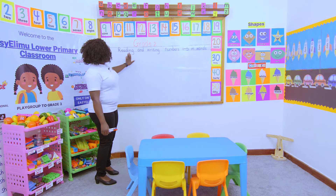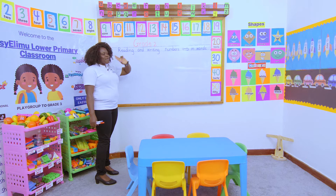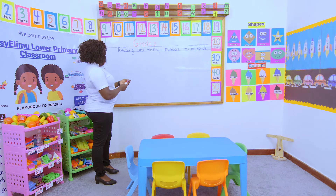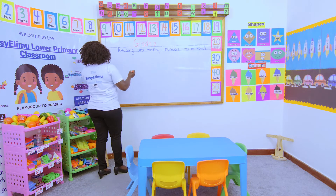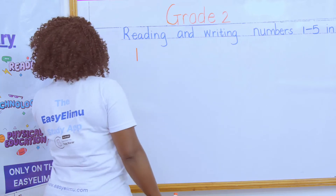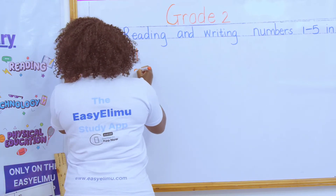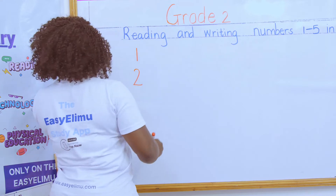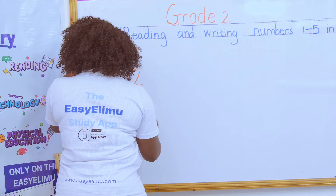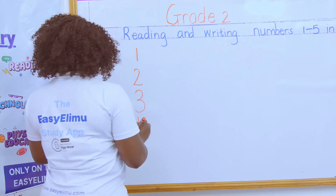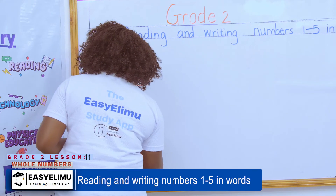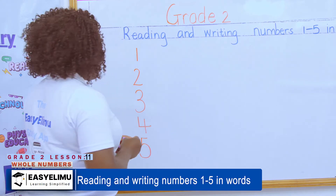So what is our topic today? Our topic today is reading and writing numbers 1 to 5. Janet, we want someone to write for us the numbers. We have 1 — one like a stick. Then 2. Which number comes there? 3 like a butterfly. 4 like a chair. And then we have 5. Very good.